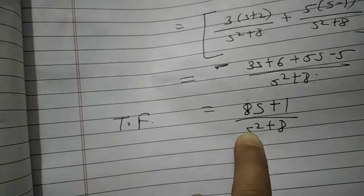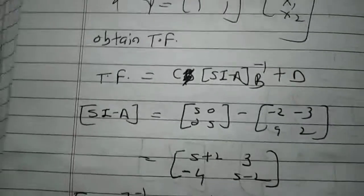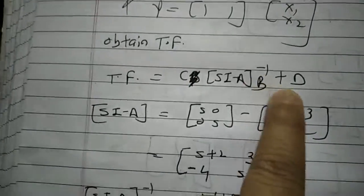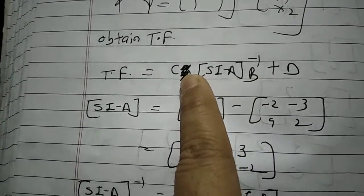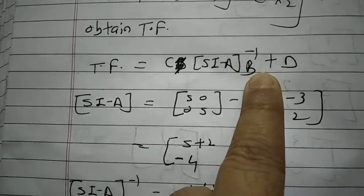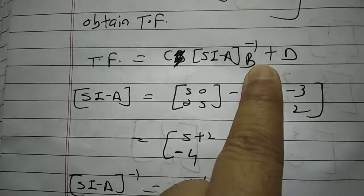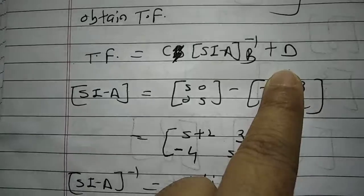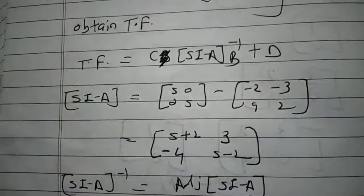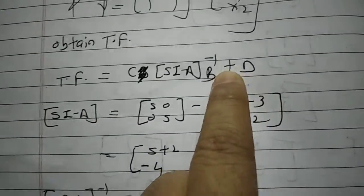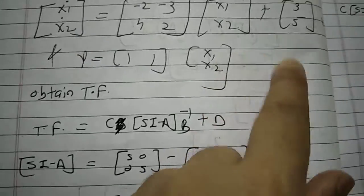Finally transfer function is this one. Just keep in mind, don't change this order. Because in matrix multiplication it is required that you should follow the order. In matrix multiplication A into B is not equal to B into A. Plus D is there but D equals 0.